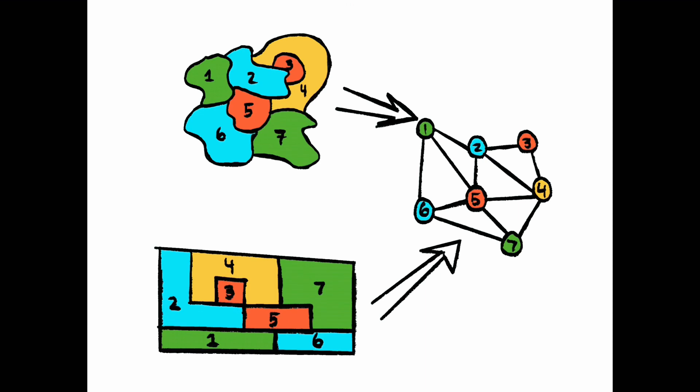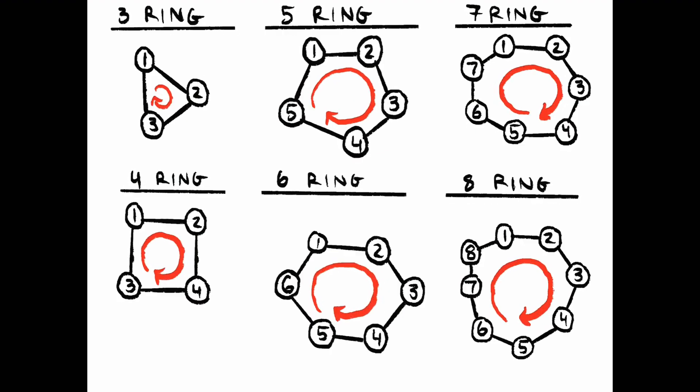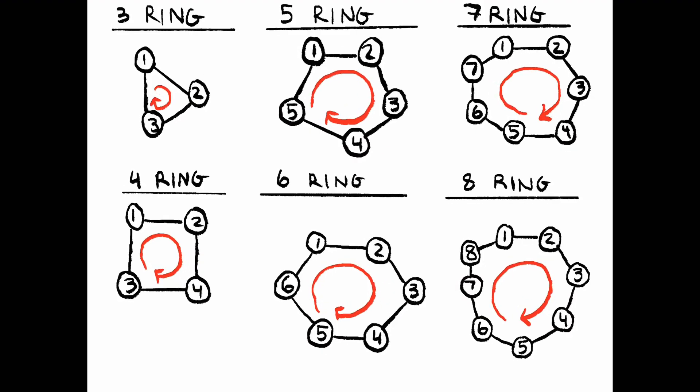The first type of structure that appears is a ring. Rings are interconnected loops of vertices, and they can come in any size. Rings will form map structures that look like this.